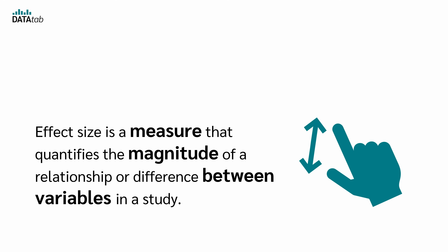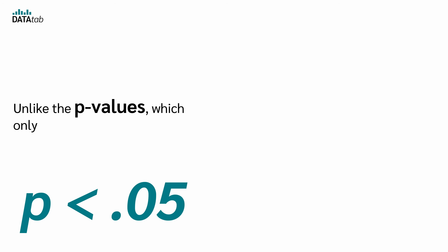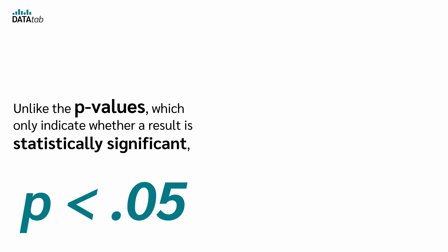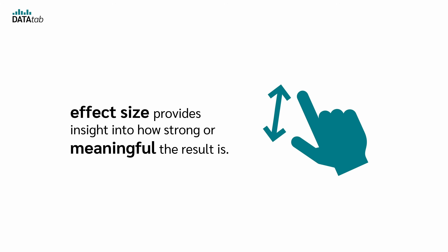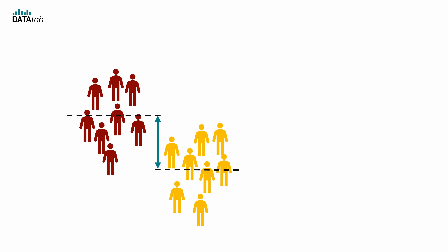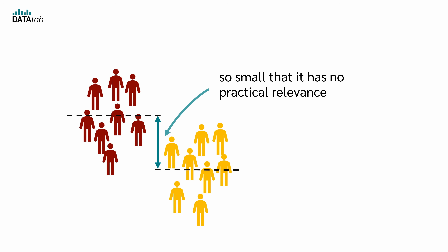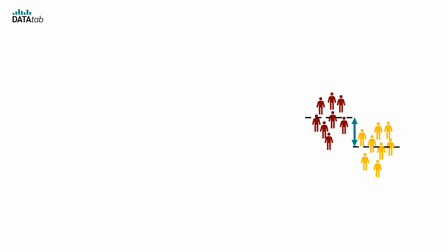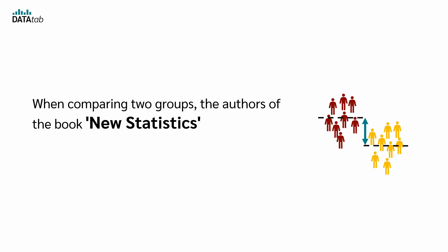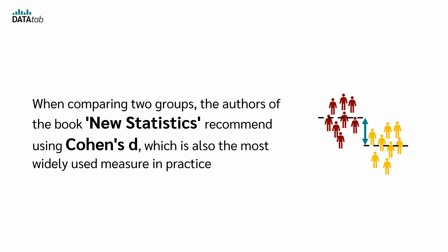Solution 3: Report effect sizes. Effect size is a measure that quantifies the magnitude of a relationship or difference between variables in a study. Unlike the p-value, which only indicates whether a result is statistically significant, the effect size provides insights into how strong or meaningful the result is. For example, when comparing two groups, there might be a statistically significant difference, but the difference could be so small that it has no practical relevance. The authors recommend using Cohen's d as an effect size, which is also the most widely used measure in practice.